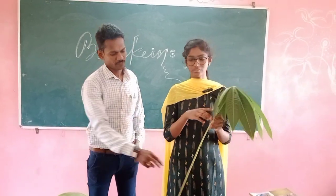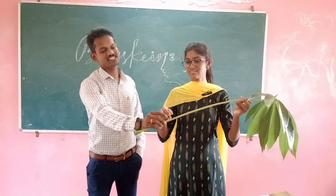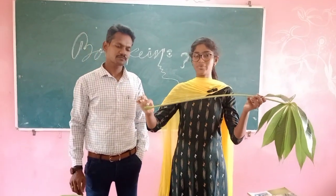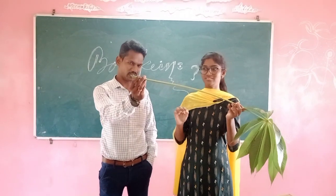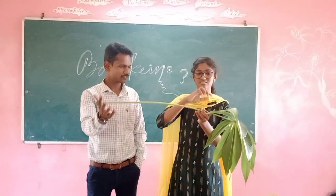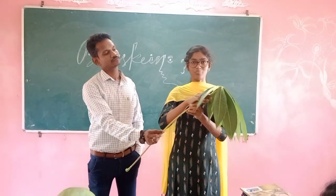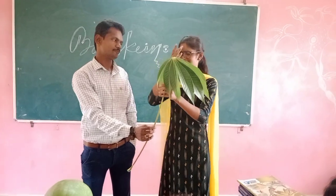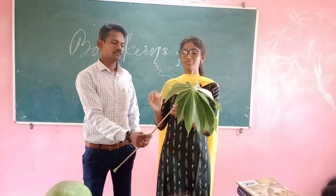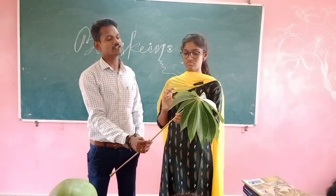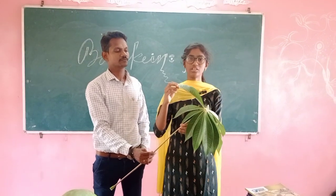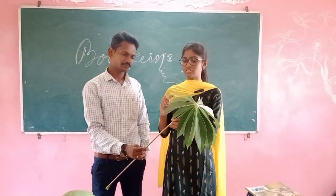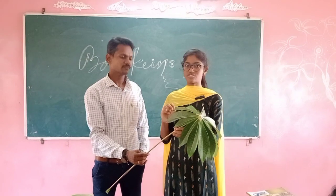This is called the petiole. This is the leaf base. This is a petiolate compound leaf — more specifically, a palmately compound leaf. The smaller divisions are called leaflets. What type of venation is that? Reticulate venation.